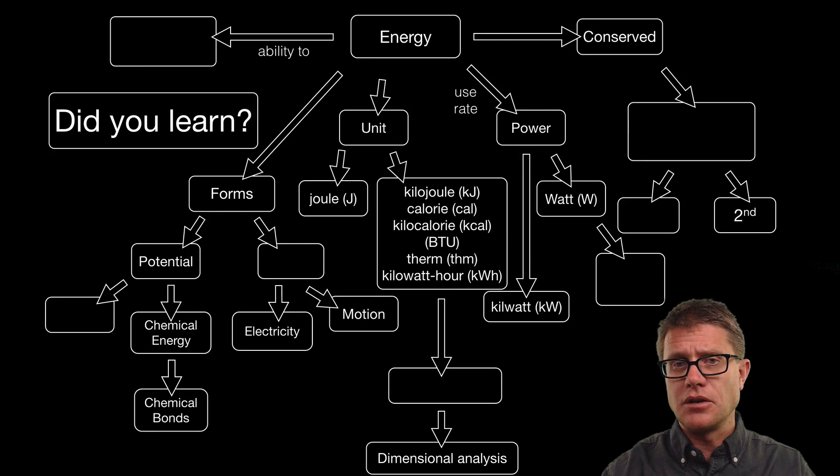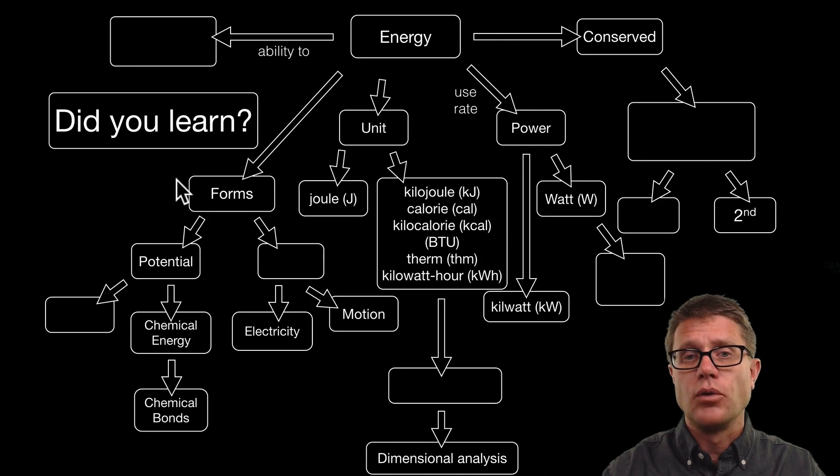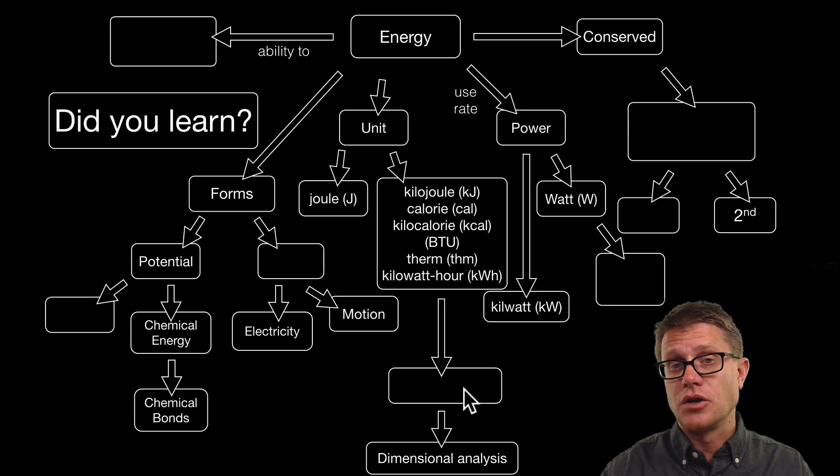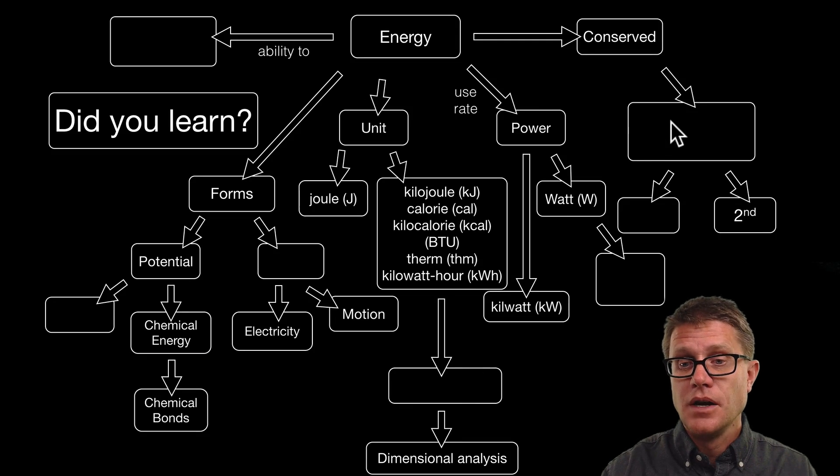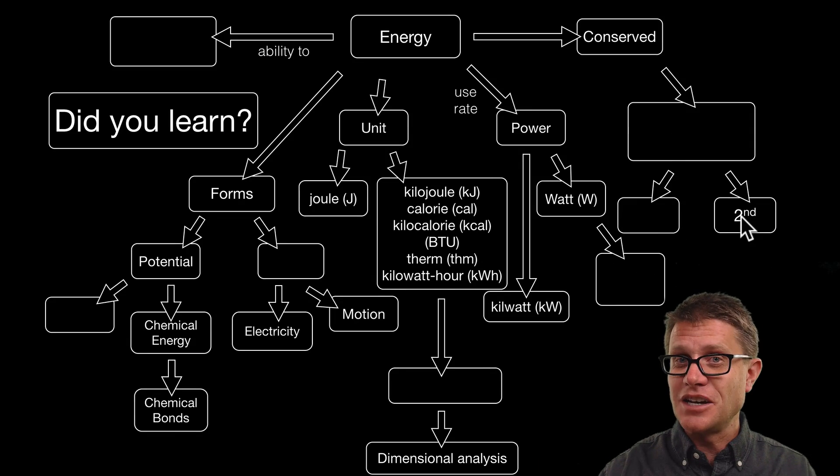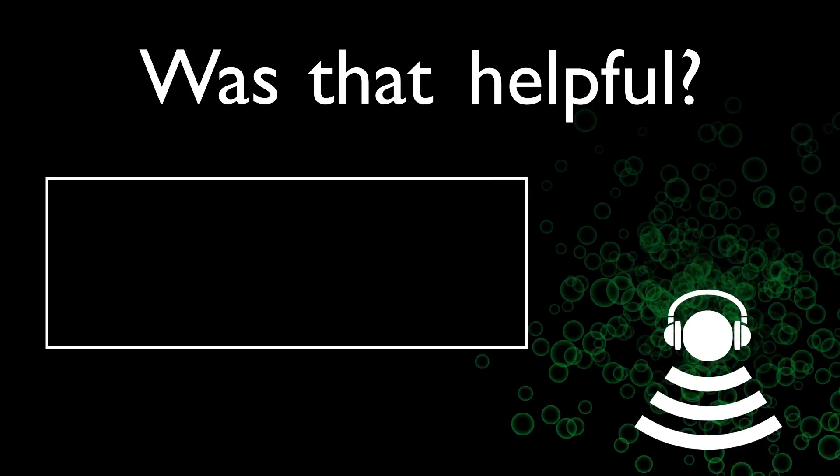Did you learn the following? Could you pause the video and try to answer what's in all the blanks? Energy is the ability to do work or transfer heat. It can be potential, which is due to position, or kinetic, which is due to motion. The unit is the joule, but we have all different types of energy forms. You have to understand not only the conversions but how to do the conversions. The watt is joules per second. Thermodynamics shows how energy is conserved. We have the first and the second law. That is energy. I hope that was helpful. Thank you.